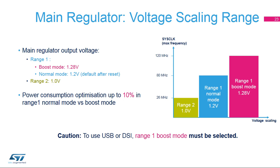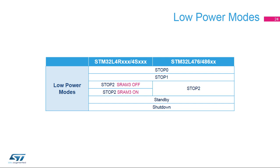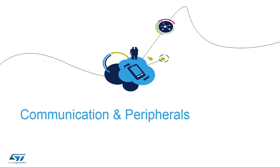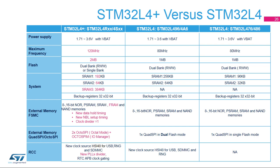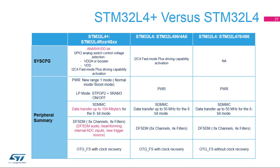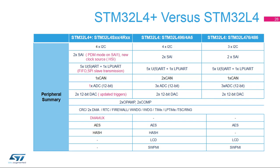The STM32L4 Plus series features the same low-power modes as the STM32L4 series, with an additional option to switch SRAM3 off or on during Stop 2 mode. The following tables detail the changes between the series concerning communications and peripherals, summarizing key differences for system peripherals between STM32L4 Plus and STM32L4 series, with differences highlighted in pink.